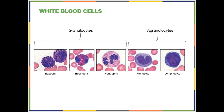Now we are on to white blood cells. You want to be able to list your granulocytes and agranulocytes. Granulocytes have granules — protein assemblies big enough to see — and get their name from their appearance and how they stain. Your three granulocytes are basophils, eosinophils, and neutrophils. Your agranulocytes, which lack granules, are monocytes and lymphocytes.